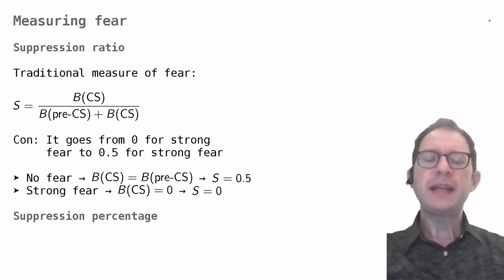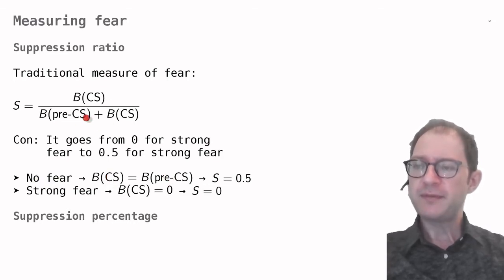These two numbers are combined in such a way that zero indicates complete suppression of behavior, corresponding to B(CS) equals zero, and 0.5 indicates no suppression at all, that is B(CS) equals B(pre-CS). We can see this in the formula. If we have no fear of the CS, B(CS) will be equal to B(pre-CS), which will give us a value of 0.5 in the formula. If we have a strong fear instead, B(CS) is zero, and so the whole S will be zero.